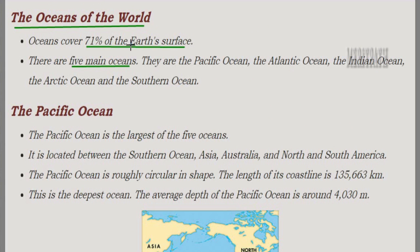Now let's see about the oceans of the world. Oceans cover 71% of the earth's surface. There are five major oceans in the world: the Pacific Ocean, Atlantic Ocean, Indian Ocean, Arctic Ocean, and Southern Ocean.